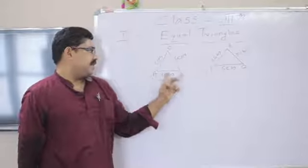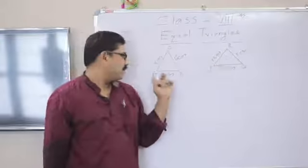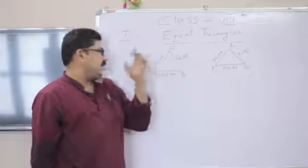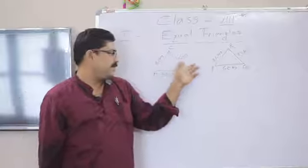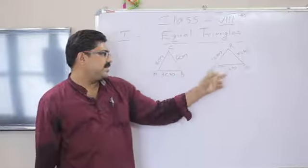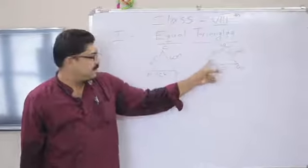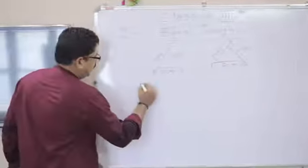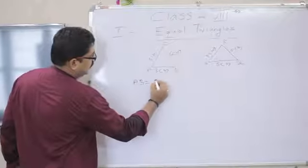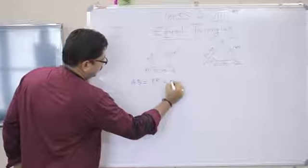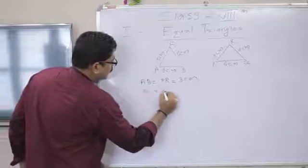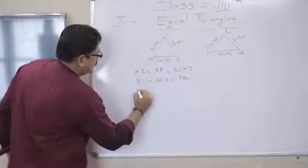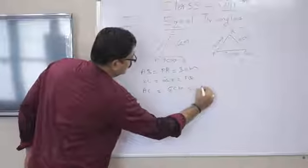Consider the triangle ABC and triangle PQR. Here AB equal to 3 centimeter, AC equal to 5 centimeter, BC equal to 6 centimeter. Here PQ equal to 6 centimeter, PR equal to 3 centimeter, QR is equal to 5 centimeter. Here the side AB equal to the side PR equal to 3 centimeter, BC equal to 6 centimeter is equal to PQ and AC equal to 5 centimeter equal to QR.